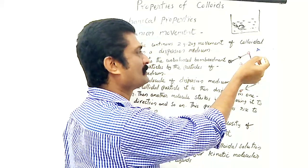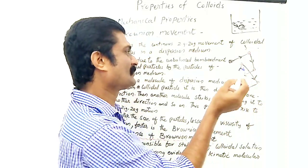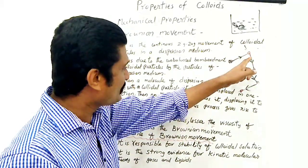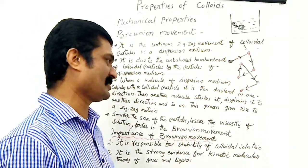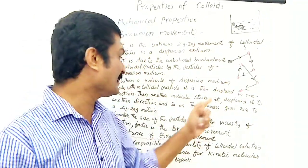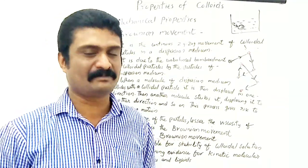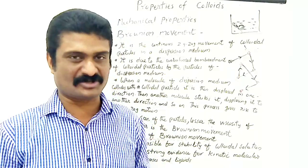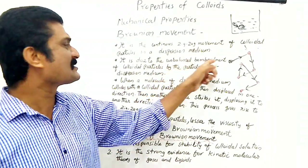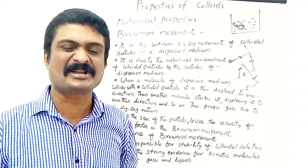Then another molecule of the dispersion medium hits this colloidal particle, displacing it in another direction, and so on. This process gives rise to the zigzag or random motion of colloidal particles in a colloidal solution. Therefore, Brownian movement is due to the unbalanced bombardment of colloidal particles by the particles of the dispersion medium.